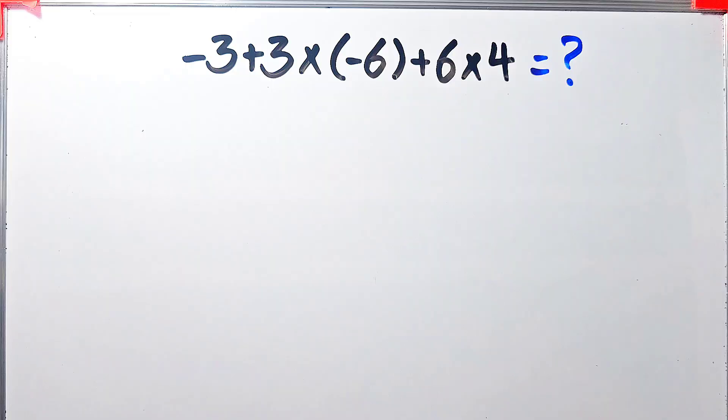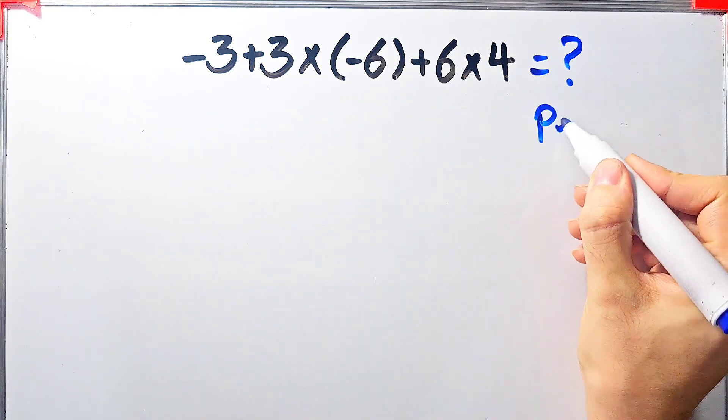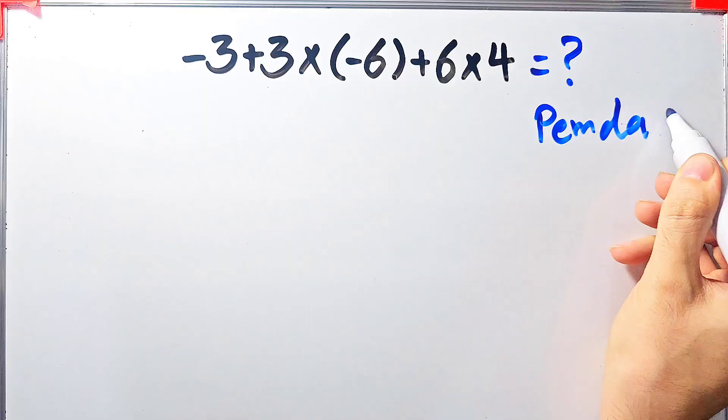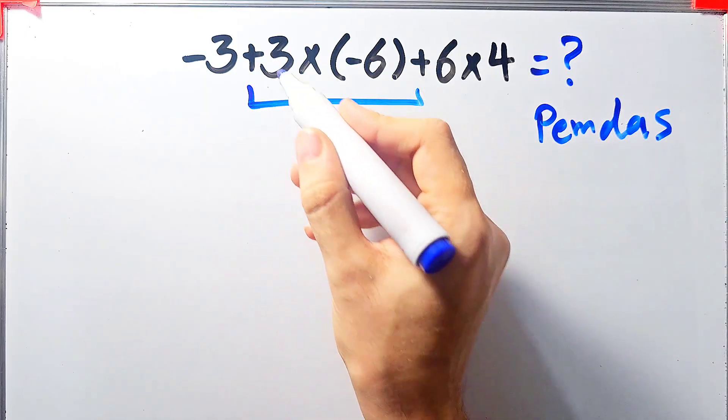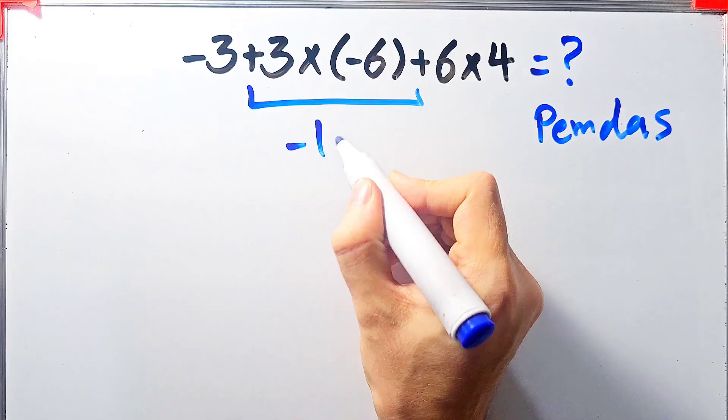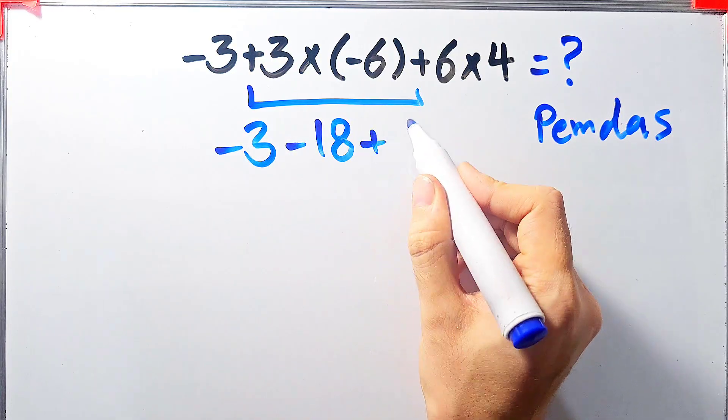Let's solve this question step by step together. To solve this question we need to follow the PEMDAS rule. According to the PEMDAS rule first we simplify this multiplication: 3 times negative 6 equals negative 18. Now we have negative 3 minus 18 plus 6, then times 4.